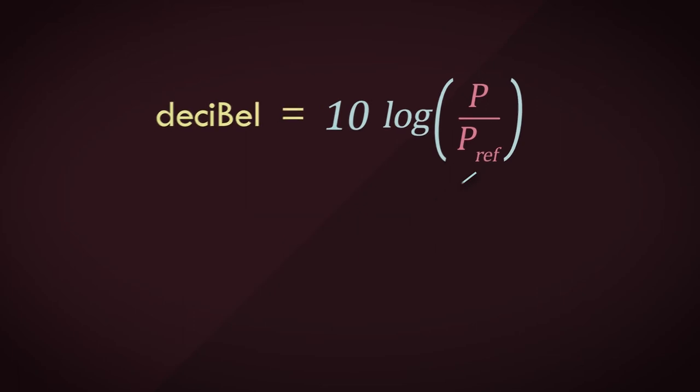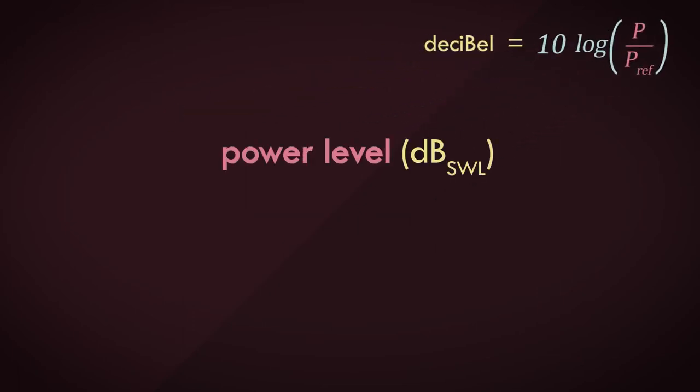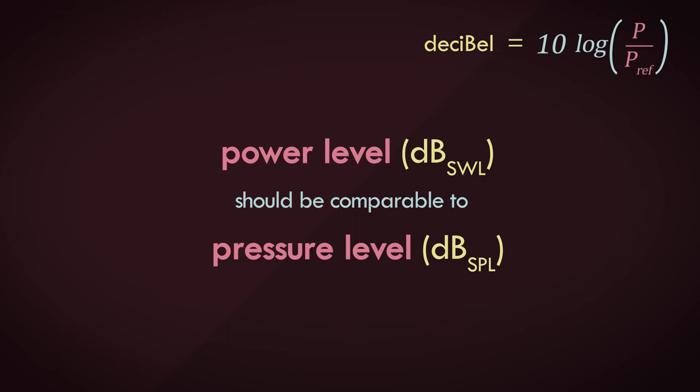But before that, we want the power level in decibels to be comparable to pressure level in decibels. Since they are both dimensionless units, we want some means of comparing between the two. We don't want to have these values completely different from each other. To achieve this, we need to have similar conditions when choosing the reference value.